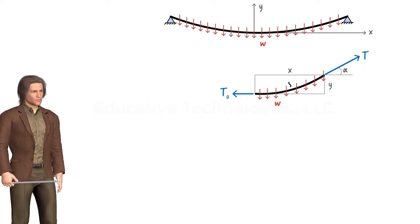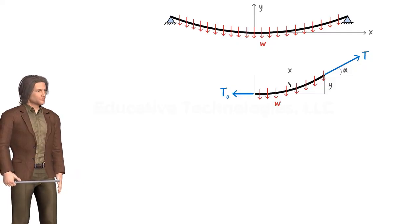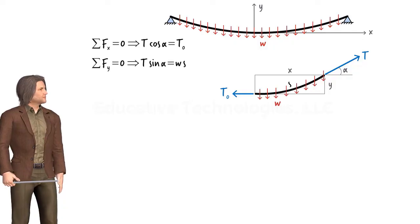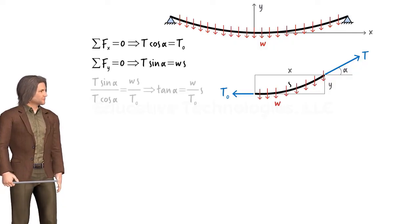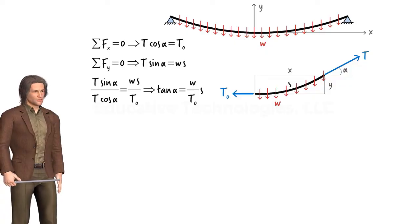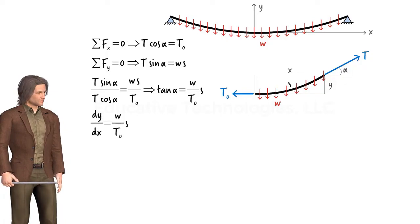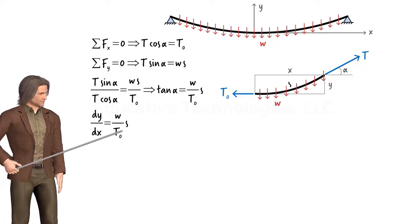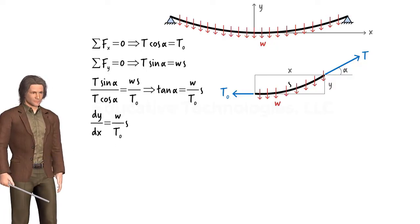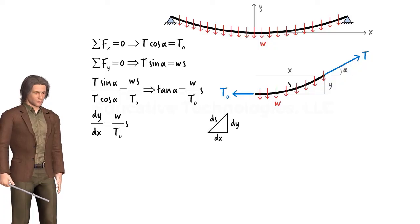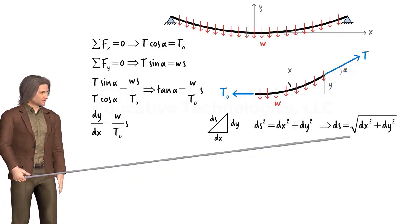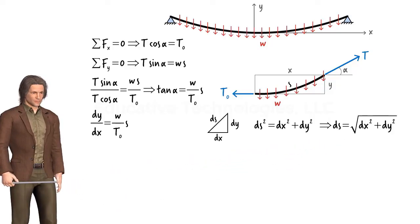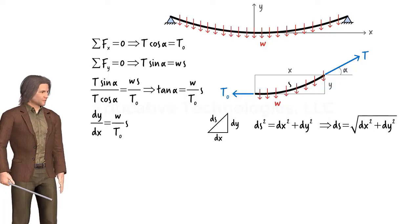This free body diagram yields two equilibrium equations. Dividing the second equation by the first equation, we get dy/dx equals wS over T0. However, before we can solve this differential equation, we need to replace S with X and Y. Using the Pythagorean theorem, we can write an expression for dS. If we take the derivative of both sides of this equation with respect to X, we get a new expression.